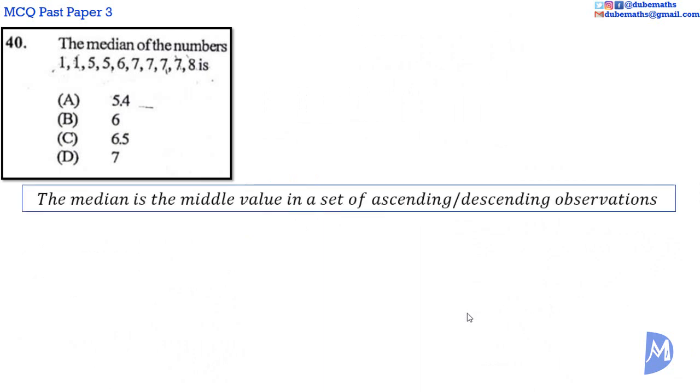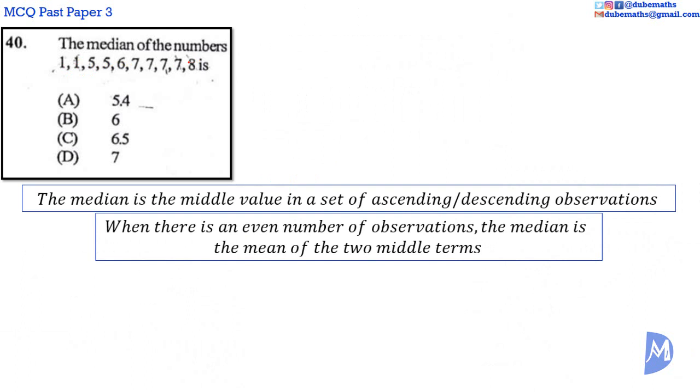Question 40. The median is the middle value of a set of ascending or descending observations. These values are arranged in ascending order. When there's an even number of observations, the median is the mean of the middle two terms.